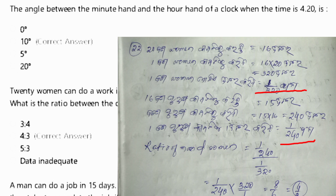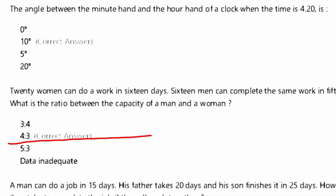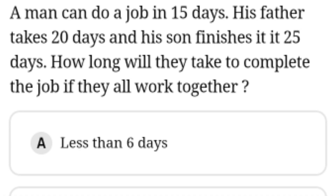We know that the ratio of man to man is 1 by 2 over 1 by 300. Bringing it the same way, that gives us 4 to 3. So the ratio is 4 is to 3.